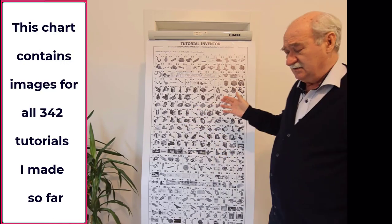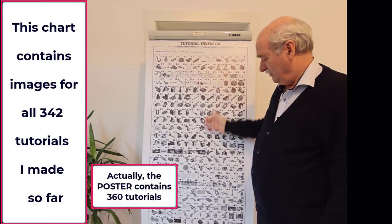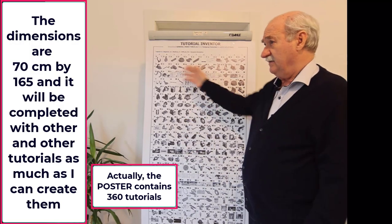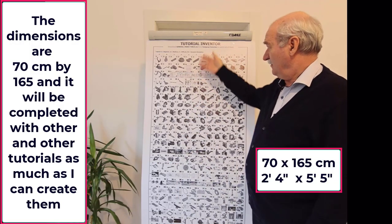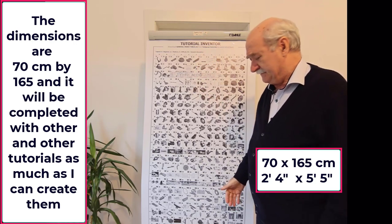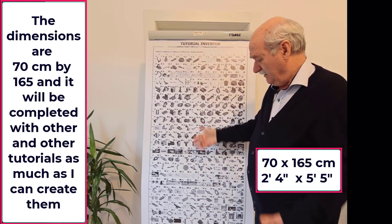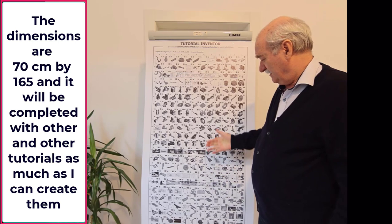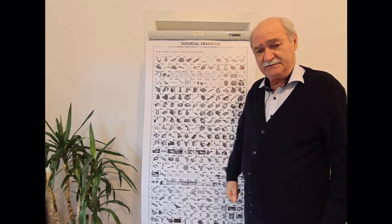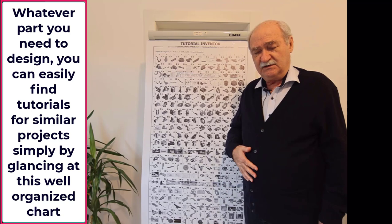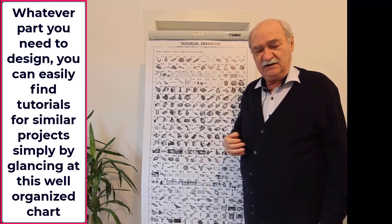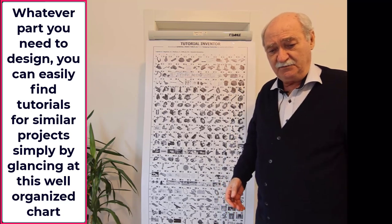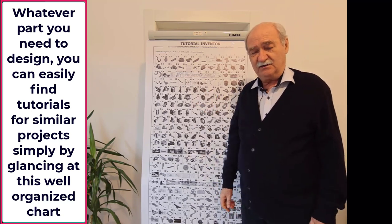This chart contains images for all 342 tutorials I made so far. The dimensions are 70 cm by 165, and it will be completed with other tutorials as much as I can create them. Whatever part you need to design, you can easily find tutorials for similar projects simply by glancing at this well-organized chart.